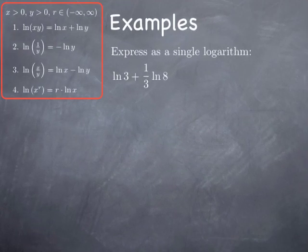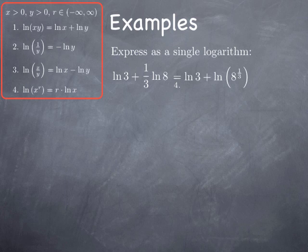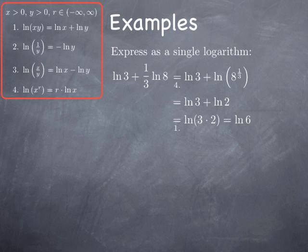Now going the other way, let's rewrite an expression as a single logarithm. For example, ln(3) plus (1/3) ln(8): we use Law 4 in reverse to bring the constant (1/3) inside as a power, giving ln(8^(1/3)). Now 8^(1/3) is the cube root of 8, which is 2. So we get ln(3) plus ln(2), and by the first law — sum of logs is log of a product — this equals ln(6). We now have the expression as a single logarithm.